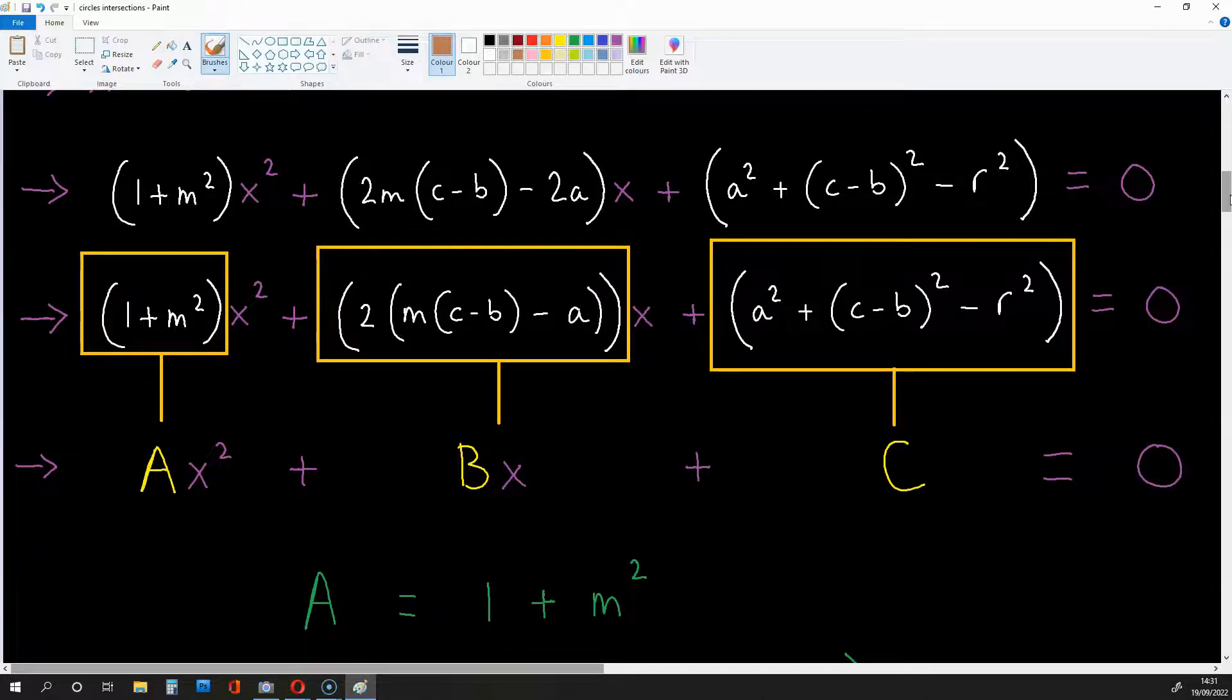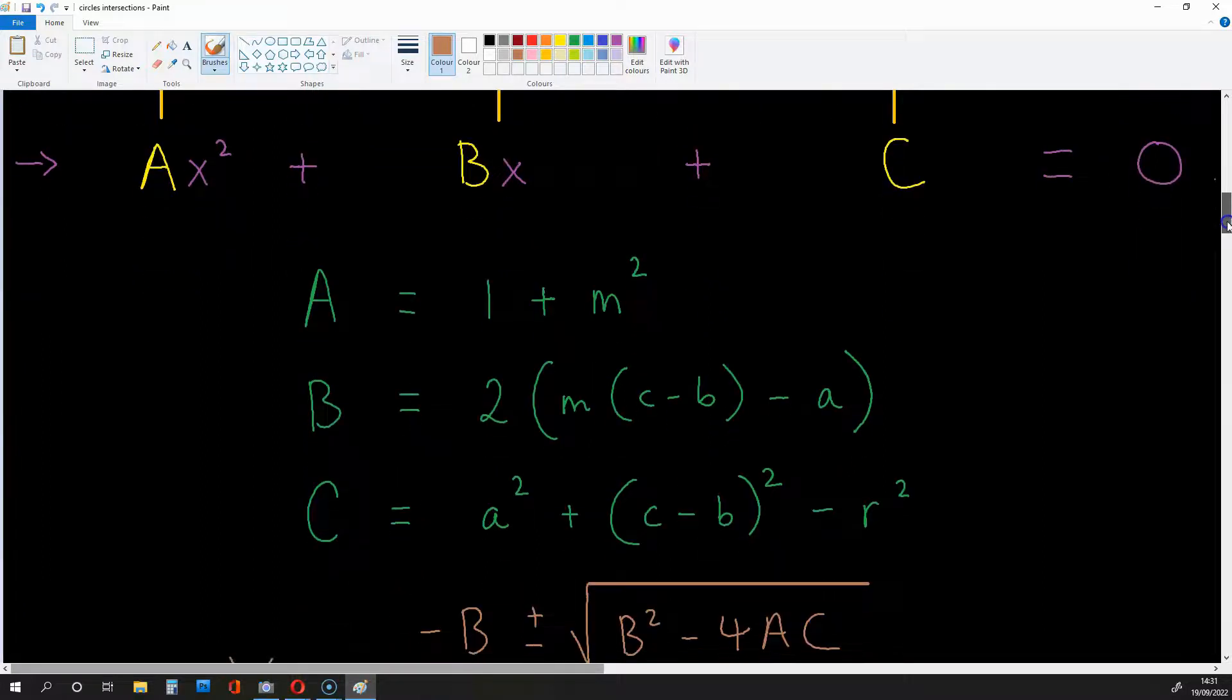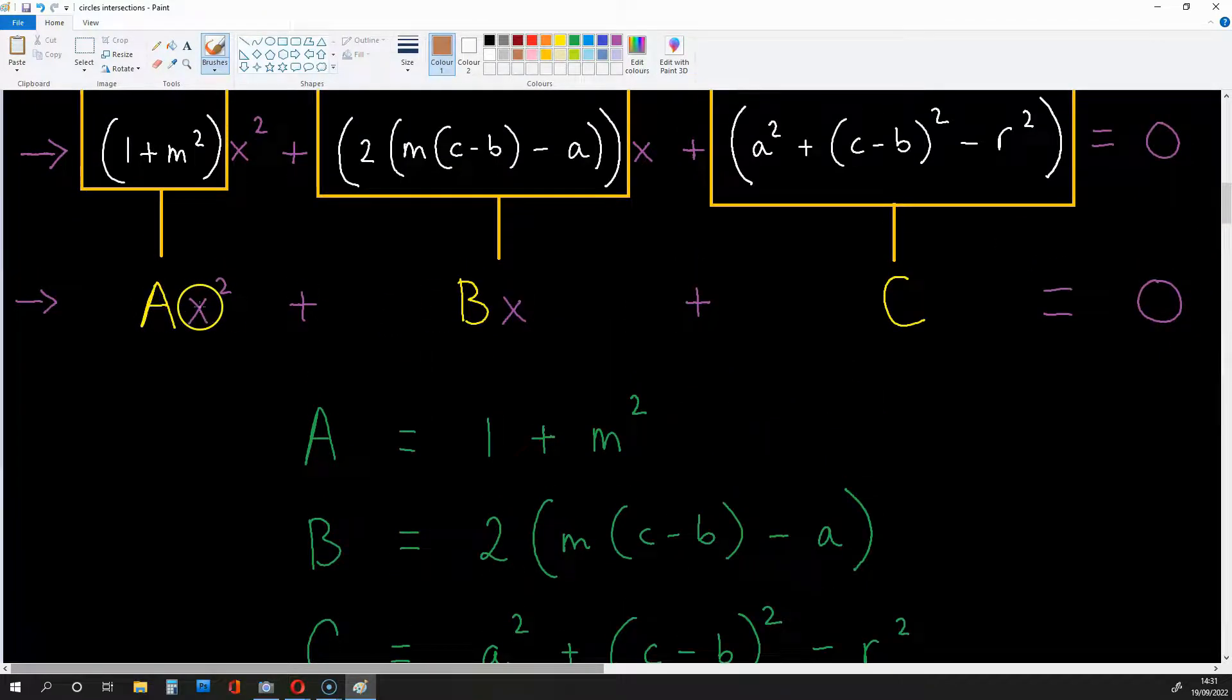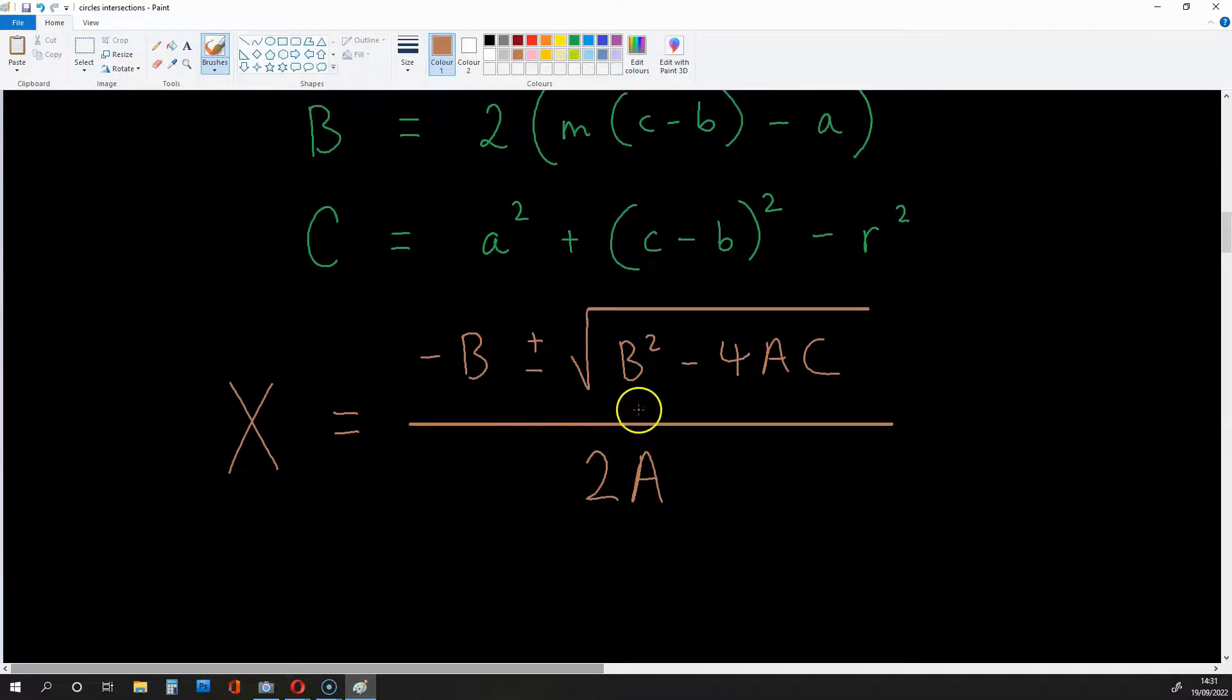Okay, we're going to get the x coordinates of the intersections. If we say that large A is 1 plus m squared, large B is this, and large C is this, from this equation over here, a x squared plus bx plus c is equal to zero. We get this value of x, minus b plus or minus the square root of b squared minus 4ac over 2a.